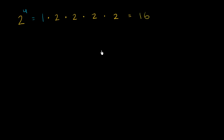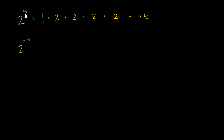Now I will ask you a more interesting question. What do you think 2 to the negative 4 power is? I encourage you to pause the video and think about that. You might be tempted to say, oh, maybe it's negative 16 or something like that. But remember what the exponent operation is trying to do. This is one way of viewing it — it's telling us how many times we're going to multiply 2.